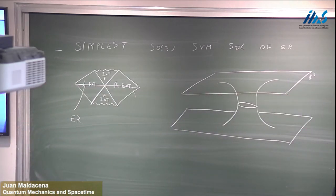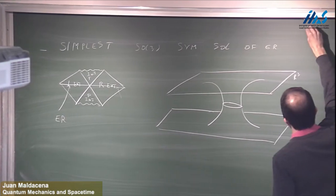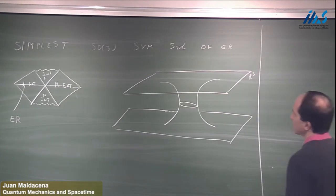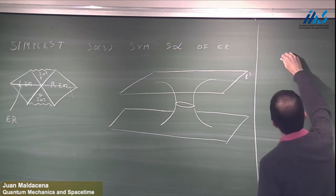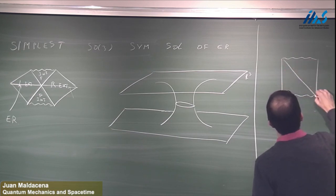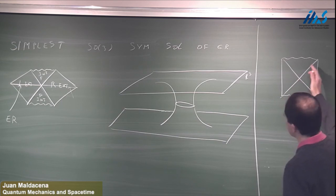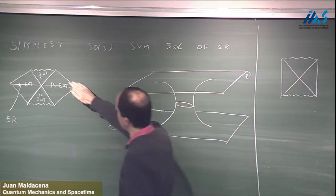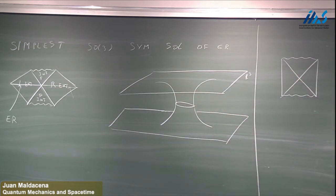This feature appears for other black holes as well. For an AdS black hole — the Schwarzschild-AdS black hole — the Penrose diagram has a similar two-sided form with a right exterior and a left exterior. The only thing that changes is that the asymptotic geometry is not R4 but AdS.